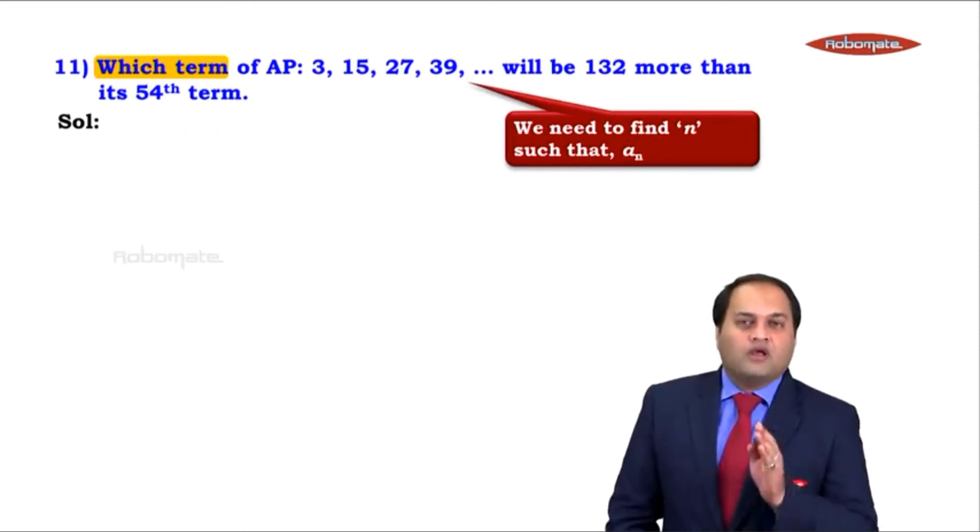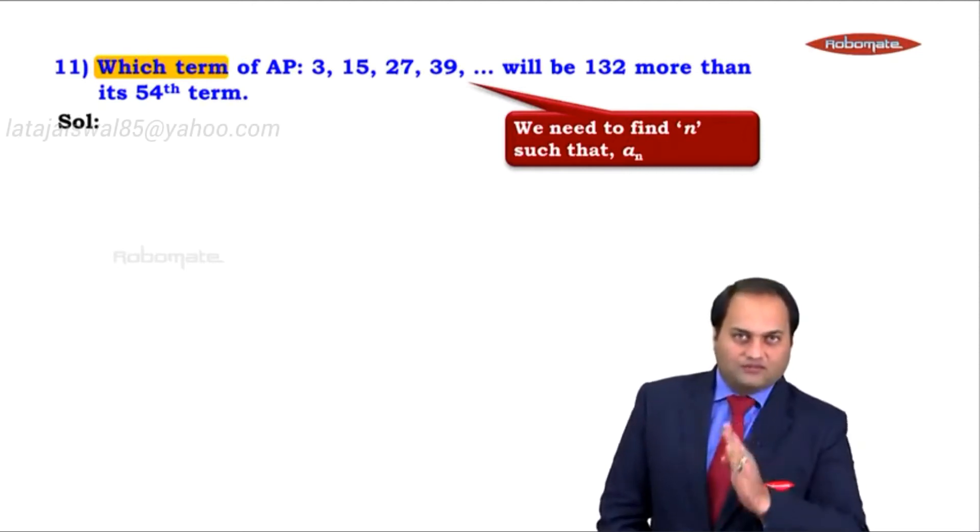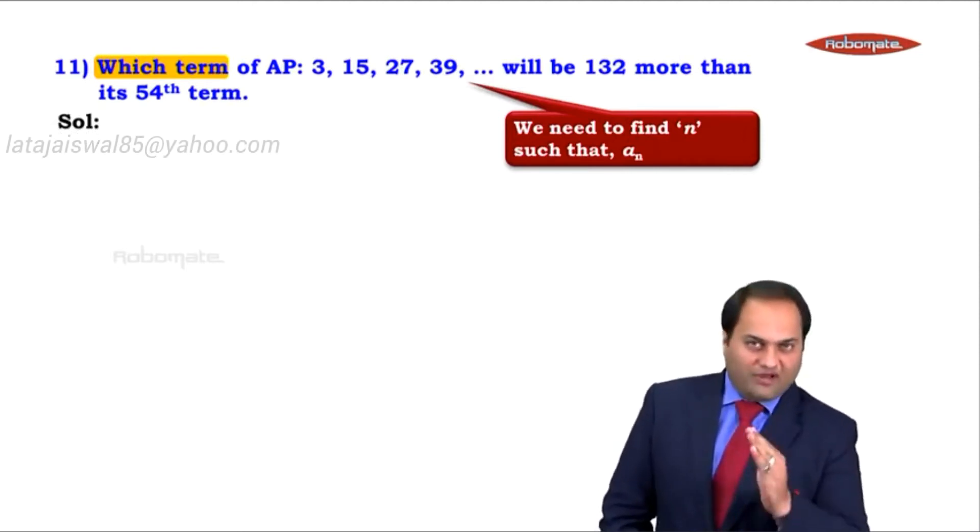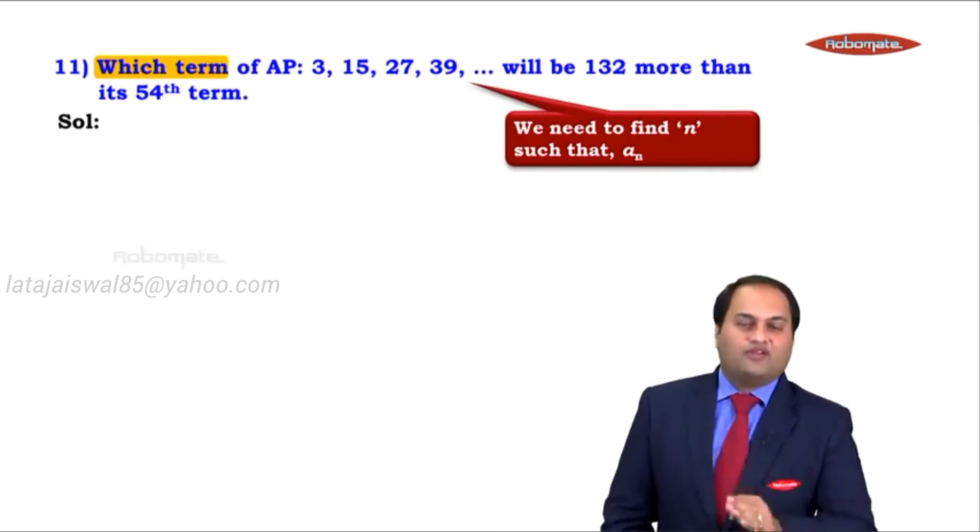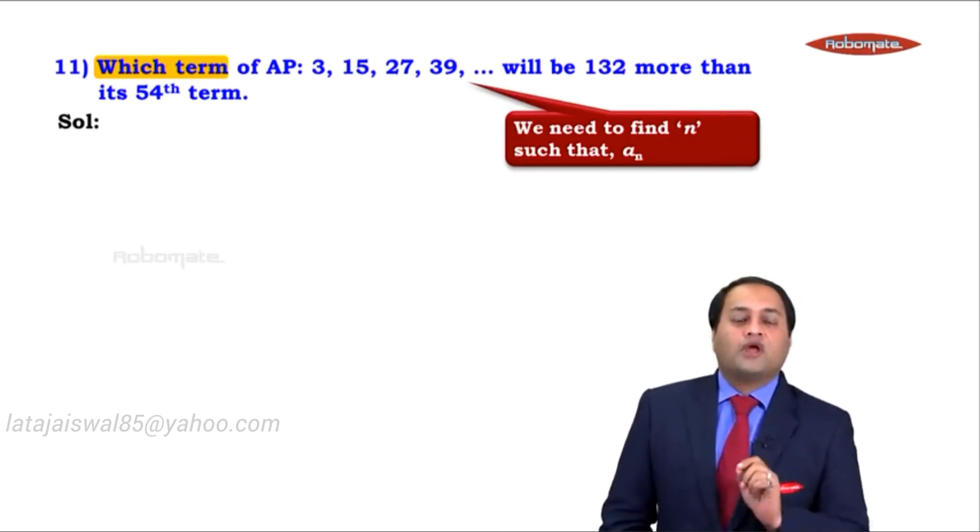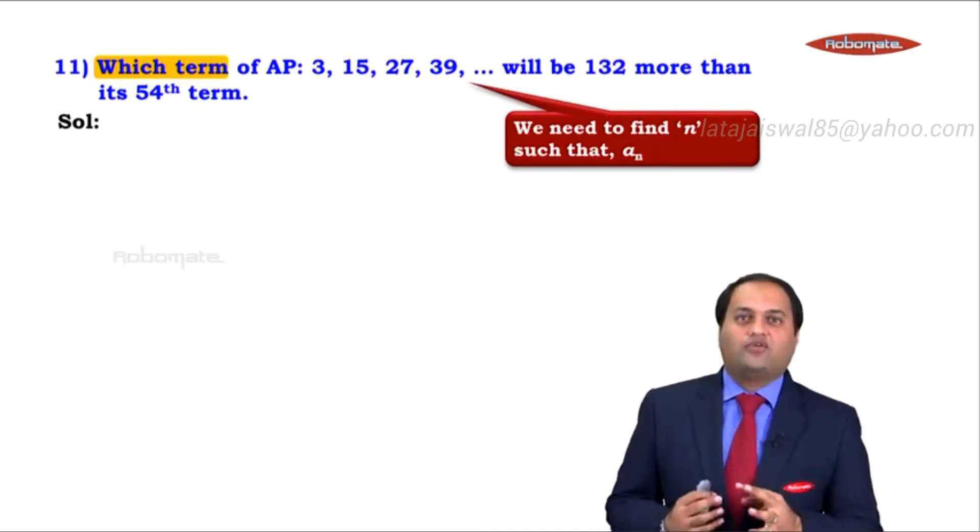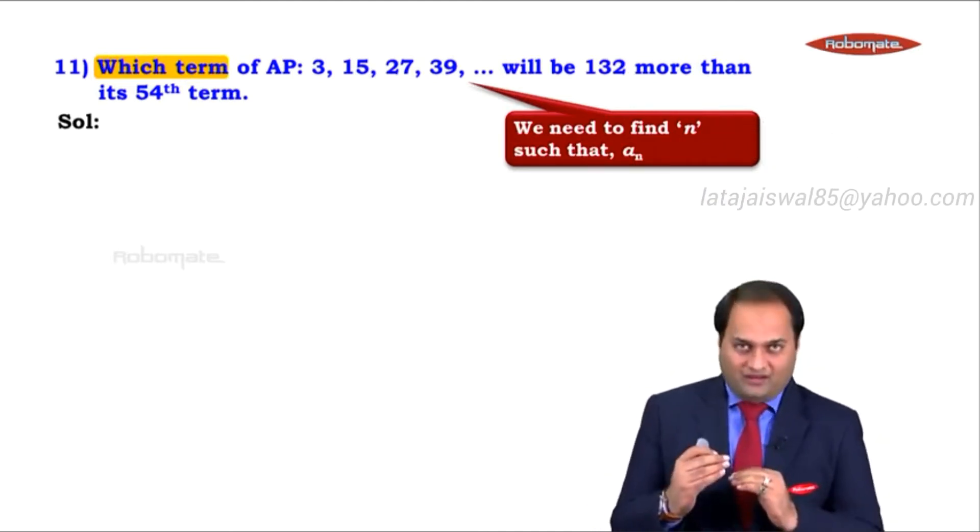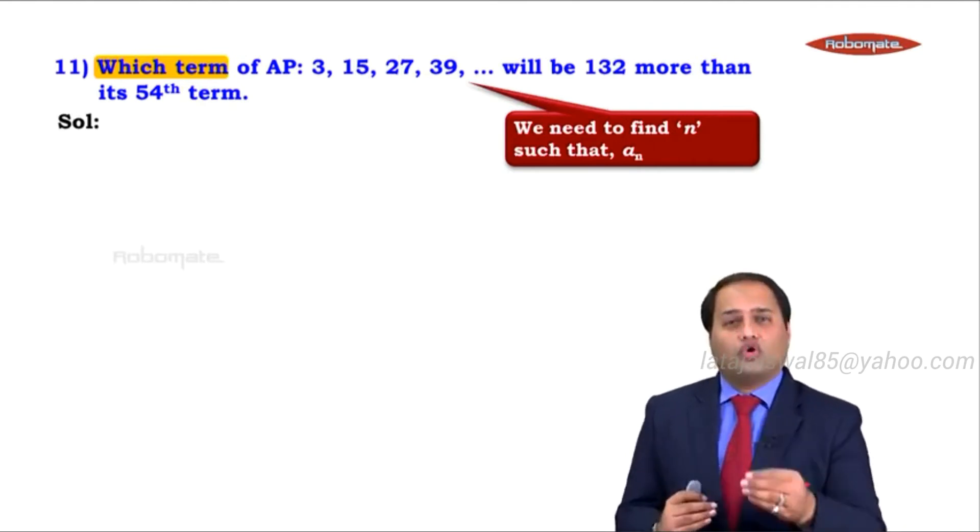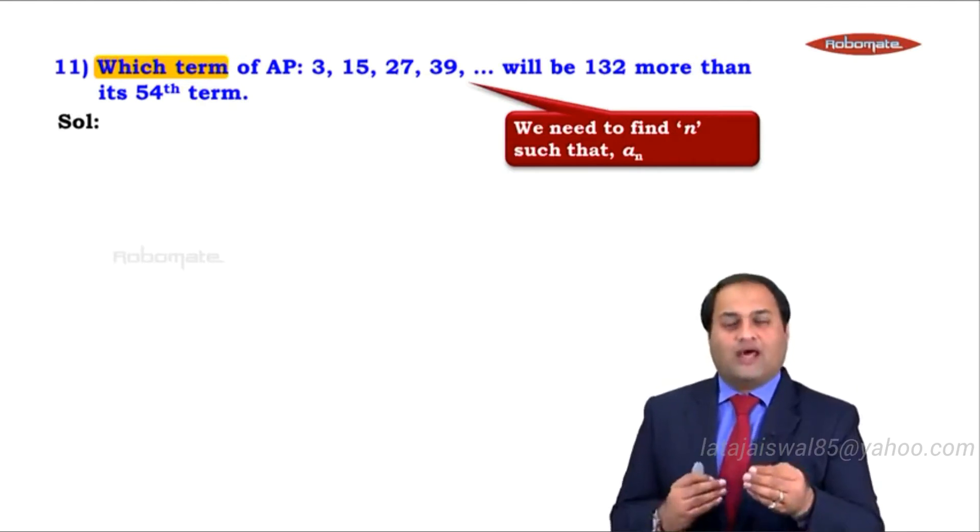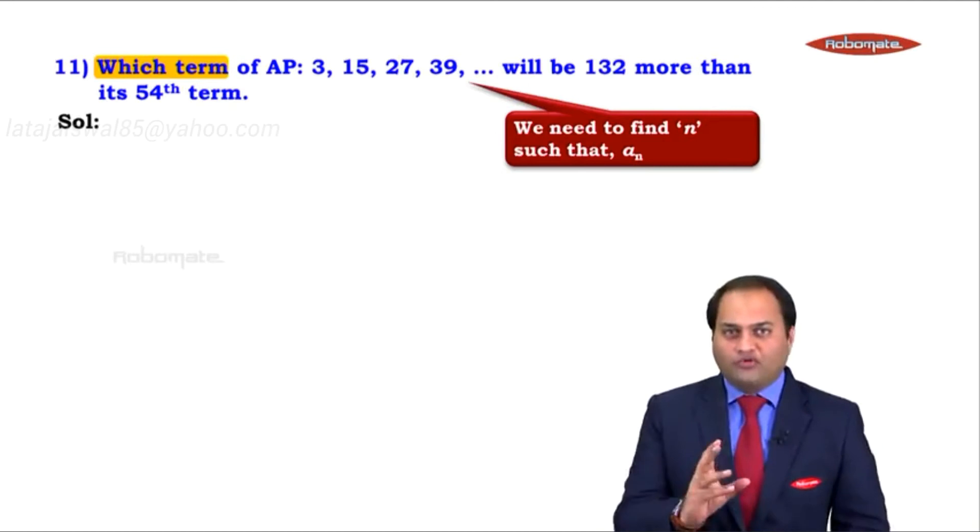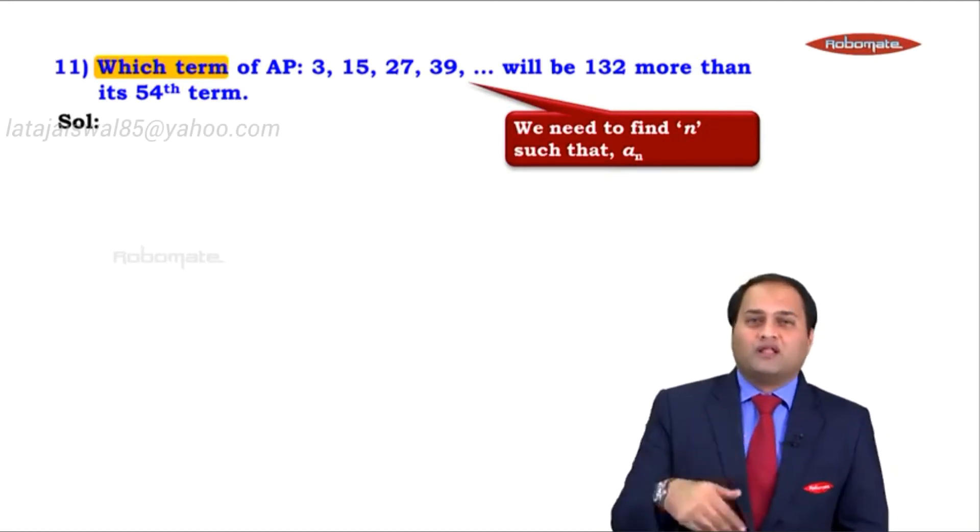Which term of the AP? That is, we are supposed to find the value of n. 3, 15, 27, 39 and so on will be 132 more than its 54th term. What they are trying to say is an is 132 more than its 54th term. So how will we form the equation?